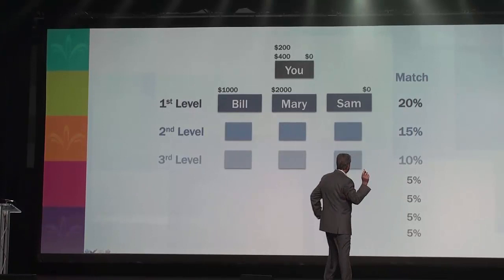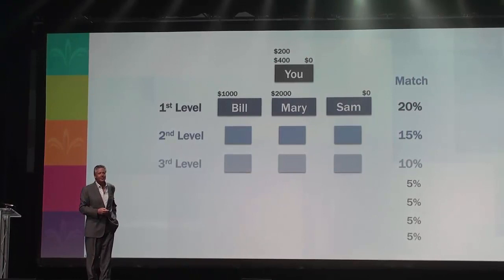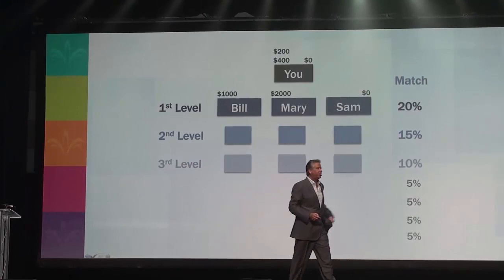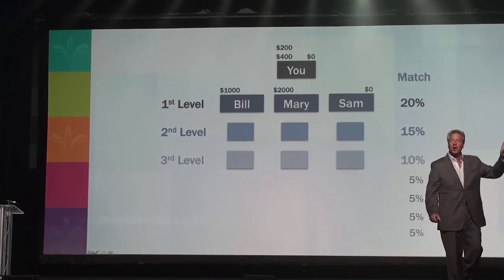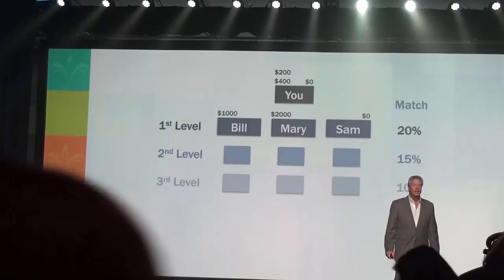We've got an incredible compensation plan, and we've got bonus pools and diamond pools. Everybody wants to make diamond in the company — why? Diamonds make a lot of money. They get to share in the worldwide sales of the company. How many people would love to get a share of the worldwide sales of a company that went from $60 million in 2011 to $120 million in 2012 to $250 million the next year to over $400 million? We're on track to do over $700 million in the next 12 months.